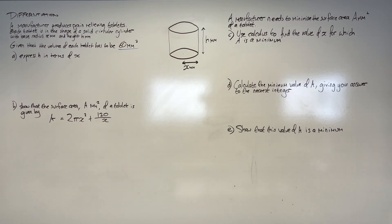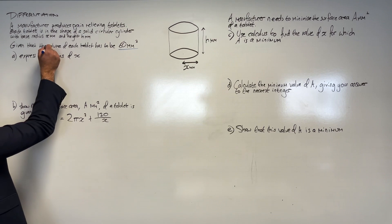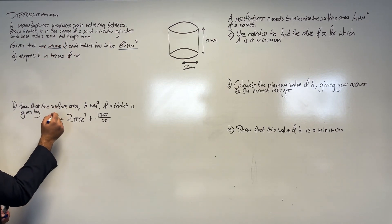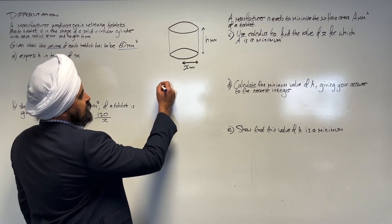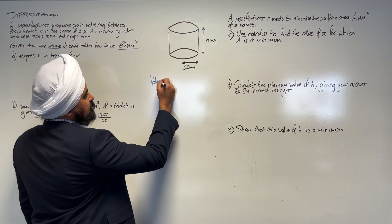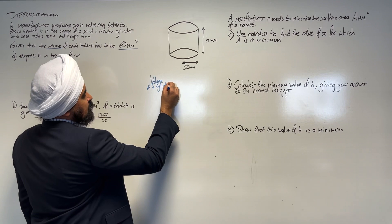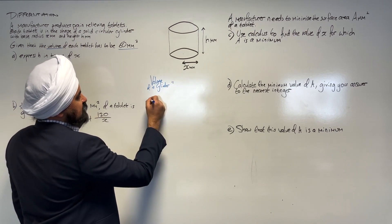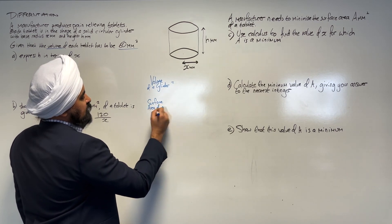express h in terms of x. Before I start to answer this question I'm just going to quickly scan through the rest of the question and see that in part b I'm asked about the surface area. So I've got a cylinder where we need to deal with the volume and we need to deal with the surface area. The first thing I want to try and do is write down what is the volume of a cylinder, and also what is the surface area of a cylinder.